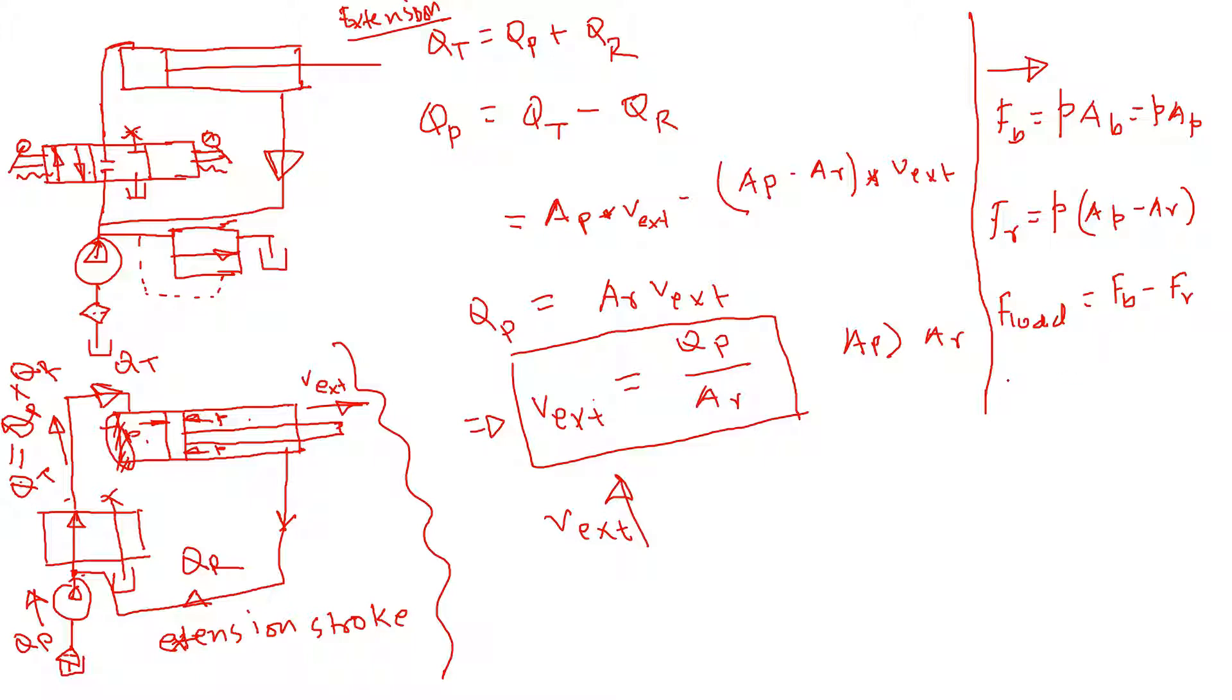So if we do this calculation, F load will be, let's put all these values, so P times AP minus then pressure times AP minus AR. So resultant I will have P times AR. So that is the load. As you can see, the load significantly decreases because the rod area, the area of the cross section of the rod, is smaller.